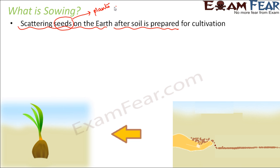In sowing, you take the small seeds — you can even purchase them from the market — and when the soil is ready you put them on it. Gradually, over a period of time, when you water them properly, germination of the seed takes place and a small plant grows from that seed. This entire process of scattering seeds after soil preparation is called sowing.